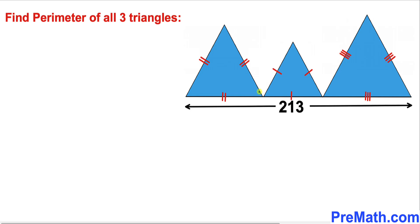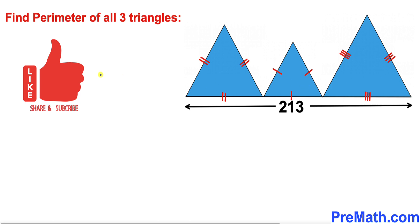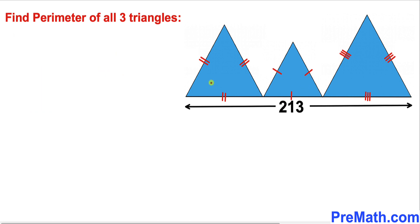Welcome to pre-math. In this video we have got three equilateral triangles with different dimensions as you can see in this diagram, such that the sum of their horizontal base is 213 units. Now we are going to calculate the total perimeter of all these three triangles. Let's go ahead and get started.